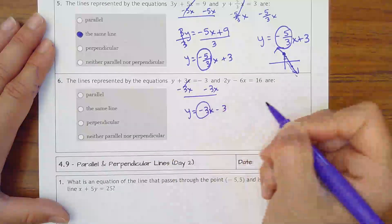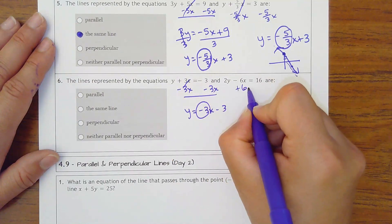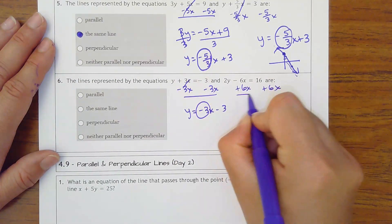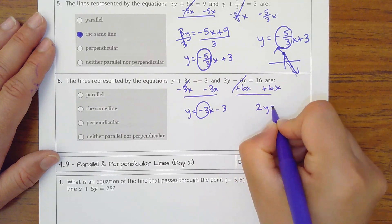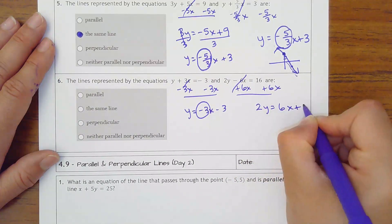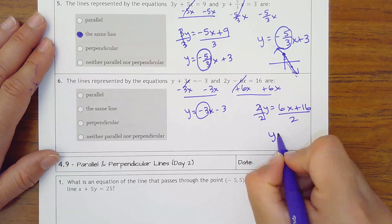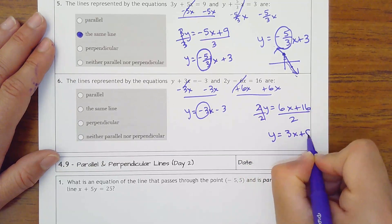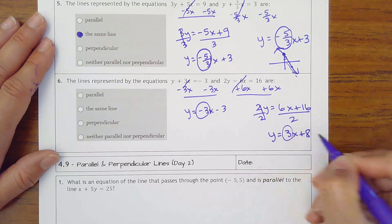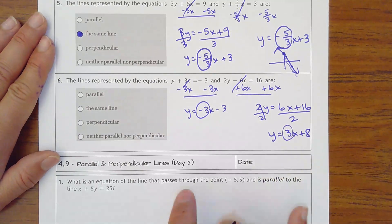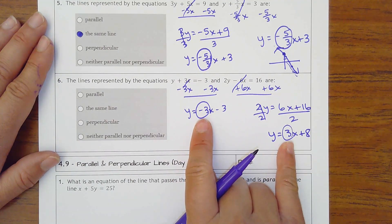Slope of the first line is negative 3. I'm going to add the 6x over. So we get 2y equals 6x plus 16. Divide everything by 2. That would be 3x plus 8. Okay, this is kind of tricky. They are negatives of one another. But are they reciprocals? No.